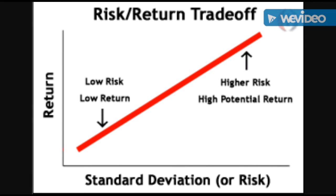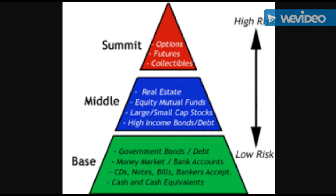For example, you would have on the base of the pyramid possible things such as foundational core ideologies, systems, or plans. Then as you go further up, closer to the apex, you would have possibly more variables that may or may not work, until you get to the top, which might be the most risky. So that's just an example.